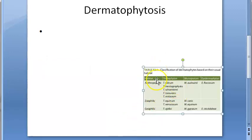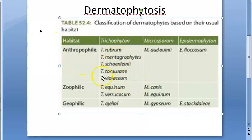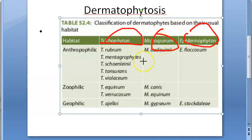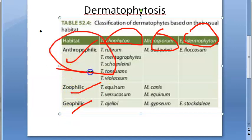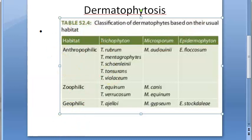These fungi are capable of infecting keratinized tissue. Trichophyton species can infect skin, hair, and nails. Based on habitat, they are classified as anthropophilic (exclusive to humans), zoophilic (animals), and geophilic (soil). For MBBS we are more concerned with anthropophilic species.